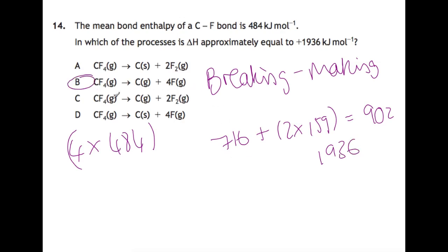If we just have a look at the other two: this one here would be 4 times 484 minus just the fluorine, because that's the only bonds that you're making, so that one would be 1618. And the last one is 4 times 484 minus just the graphite at 716, so that one is 1220.